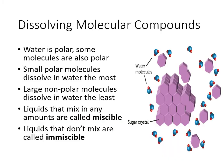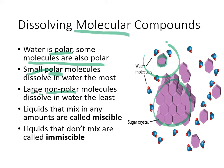Molecular compounds, when they dissolve, do not break apart — the actual molecules stay together. Water is polar, and some molecules are polar; those that are polar will dissolve in water if they're more attracted to the water. Things that are small and polar tend to dissolve quite easily, while things that are large and nonpolar don't dissolve well. Sugar is quite polar, so it gets surrounded and hydrated by water, but the individual sugar molecules do not get broken up.